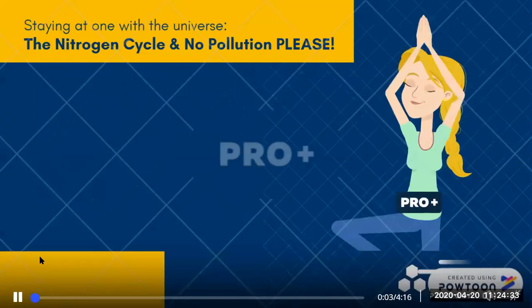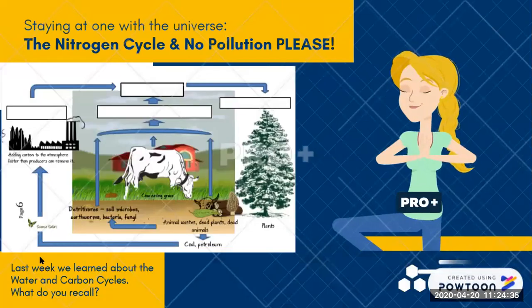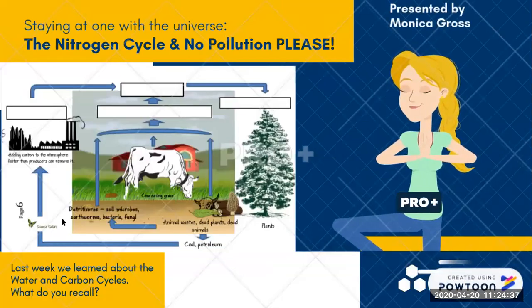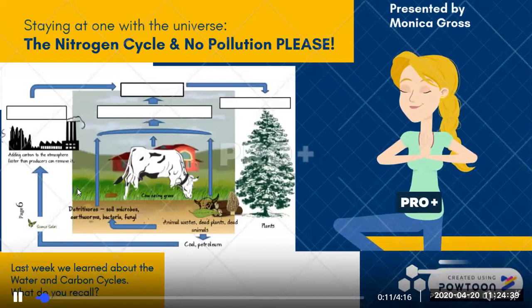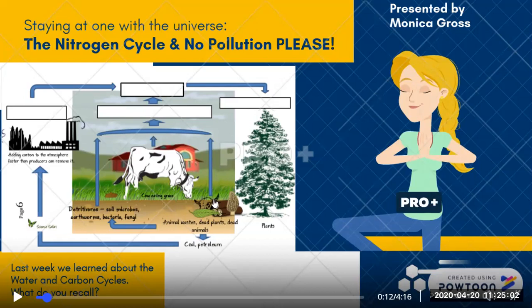So last week we learned about the water and carbon cycles. What do you remember? You can see here the atmosphere, and that plants take in — through the synthesis of water — and plants are eaten by animals. The carbon goes into the animals.